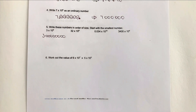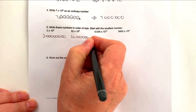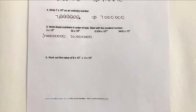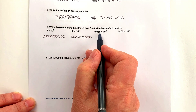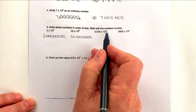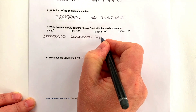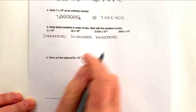32 times 10 to the power of 6 is 32 with 6 zeros after it. Now for 0.034 times 10 to the power of 10 — we can move the decimal point 3 places to get to 34, but we're actually moving it 10 places in total, so we need 34 and then another 7 zeros.